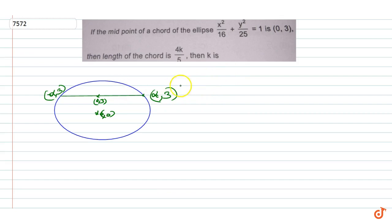So it is given that (alpha, 3) lies on the ellipse. That is alpha squared by 16 plus 3 squared by 25 equal to 1. This means alpha squared by 16 equal to